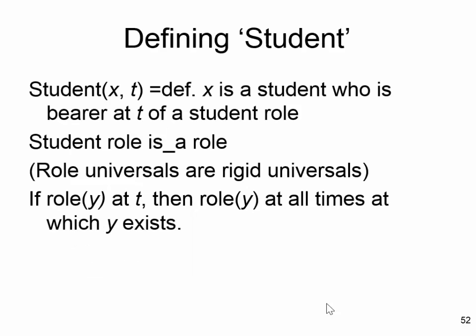We can define what it is to be a student: X is a student at a given time if X is a bearer of the student role, and the student role is a subtype of the more general type role. This is the way in which BFO deals with taxonomies which apply to entities only for certain phases of their existence. If you're a human being, you're a human being at every point in your existence; if you're a student, you're a student only for some points. Some ontologies don't have this, and so they have peculiar taxonomies including employer, employee, patient, and organism all on the same level, leading to redundant hierarchies which bring all kinds of problems.